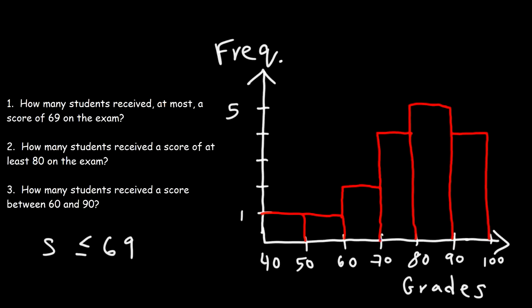So the scores that are below 69 start here, everything to the left of 70. So between 40 and 50, we have one student who scored in that region. Between 50 and 60 is one student. And between 60 and 70, but technically between 60 and 69, we have two students who scored in that range. So the total number of students is going to be one plus one plus two. So thus we have four students who received a score of 69 or less on the exam.